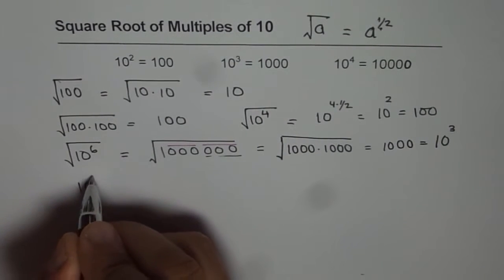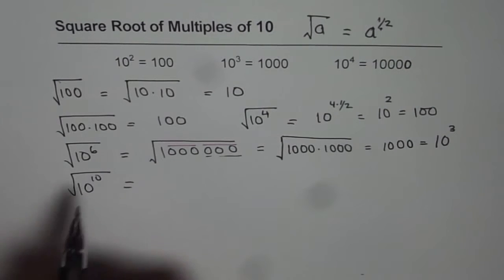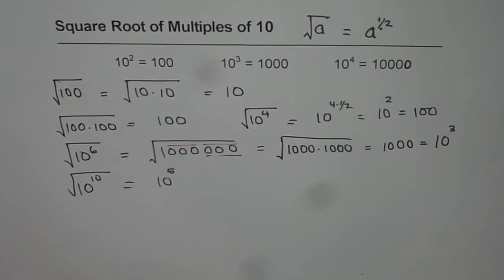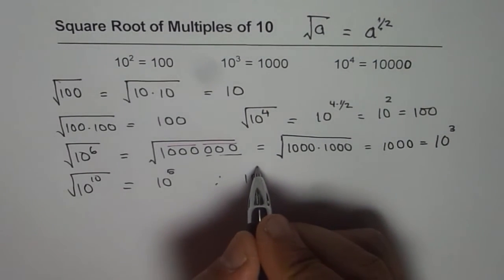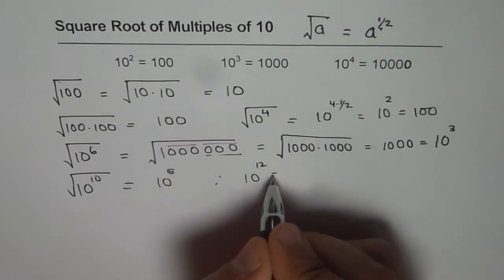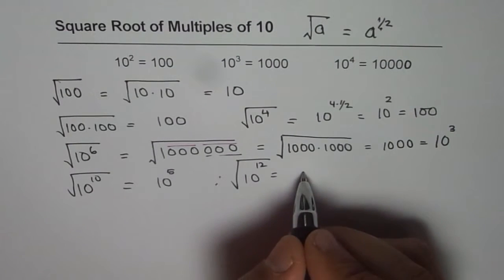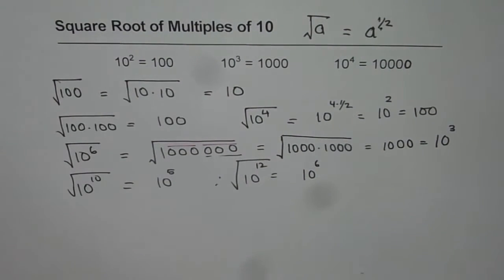What is the square root of 10 to the power of 10? Half of 10 is 5, so the answer should be 10 to the power of 5. Now what is the square root of 10 to the power of 12? Half of 12 is 6, so the answer is 10 to the power of 6, which is 1 million.